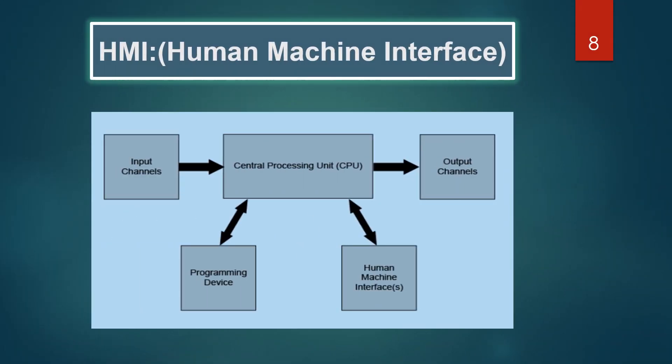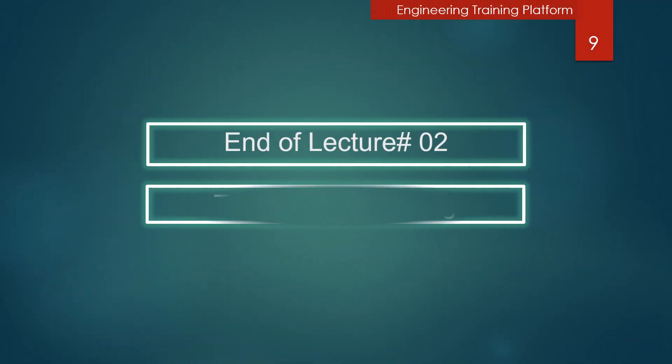HMI are often connected to a PLC to allow factory personnel to monitor or edit a machine process. This is end of lecture 2. Thank you very much.